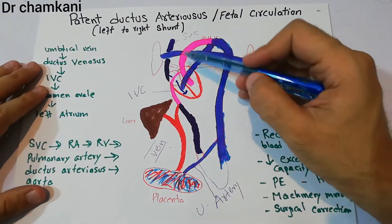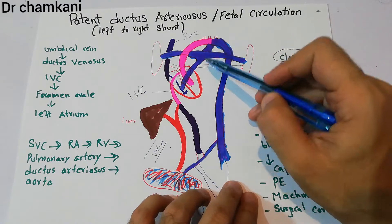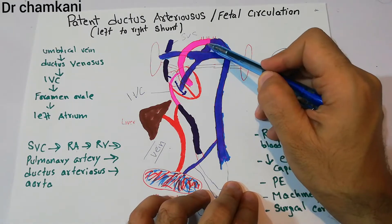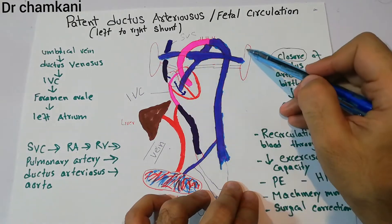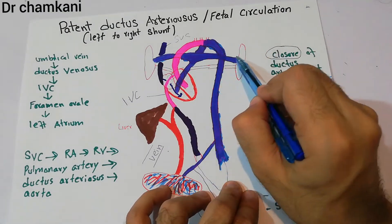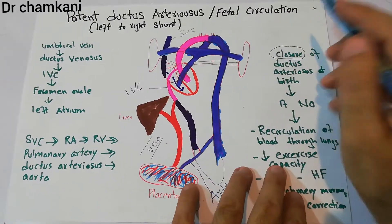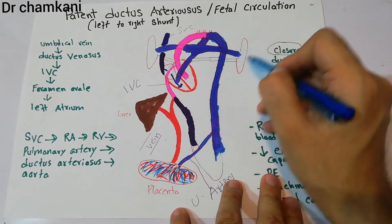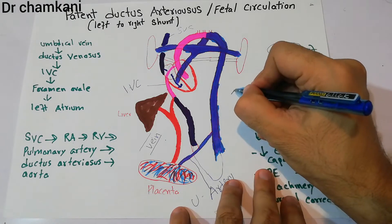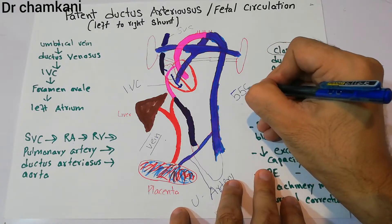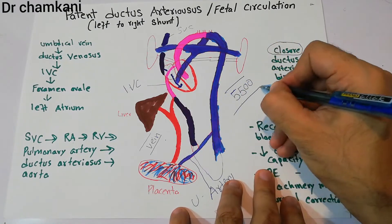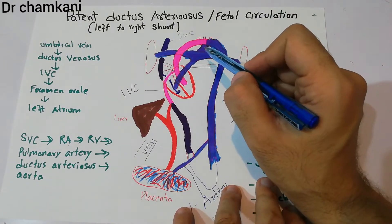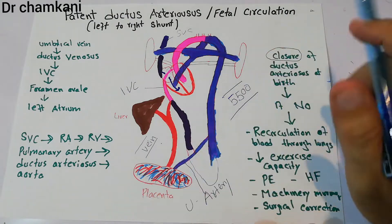Before birth, the purpose of the ductus arteriosus was to divert blood from the pulmonary artery into the aorta, because the lungs were collapsed. After birth, this duct should close so blood can move into the lungs. However, in around 1 in 5,500 babies, this duct does not close and remains open.